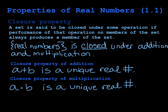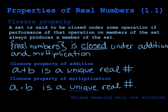Can you think of an operation that is not closed? Something where you could get something else as your answer — more than one answer? And when I say unique, let me clarify: that means only one, not unique like it's really cool, but unique meaning there's only one of them.